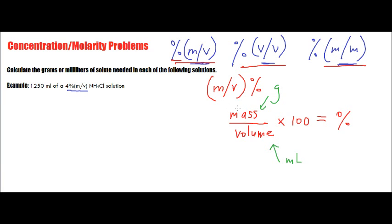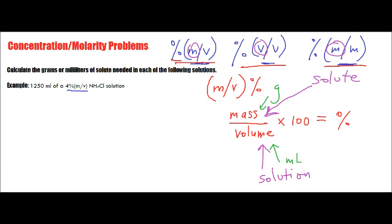A few other things I want to make note of that I may not have been as clear about in the video because of the examples I used. The mass divided by the volume: whatever this first letter is representative of is always representing the solute — whatever is being dissolved within the entire solution. The solute is always represented by whatever the top number is, or whatever the first letter is in this set of letters for concentration. The bottom part, in this example in milliliters, is representative of the entire solution.